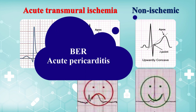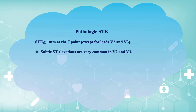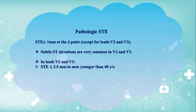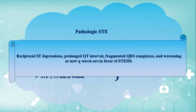Note that benign early repolarization and acute pericarditis are two common causes of concave ST elevation. Pathologic ST segment elevation means at least 1 mm ST elevation at the J point, except for leads V2 and V3. Subtle ST elevations are very common in V2 and V3. It is generally accepted that in leads V2 and V3, ST elevations equal to or less than 2.5 mm in men younger than 40 years old, equal to or less than 2 mm in men older than 40 years old, and equal to or less than 1.5 mm in women of any age are all considered normal. Other associated findings that favor ST elevation MI include reciprocal ST depressions, prolonged QT interval, fragmented QRS complexes, and worsening or new Q waves.